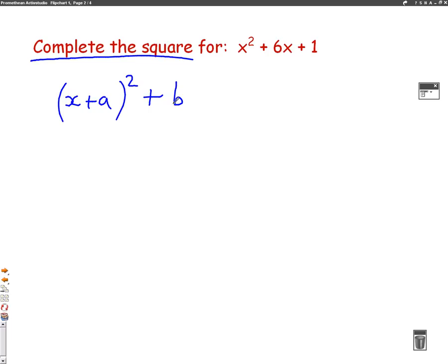So completing the square is a way of factorising, but it's a little bit different to the two bracket stuff you did at GCSE. So, let's have a look at the question: x squared plus 6x plus 1. All we need to do is look at the middle number, the plus 6x.